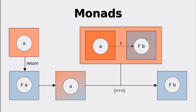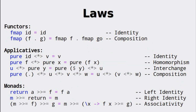In summary, functors, applicatives and monads have laws that they need to obey. These laws directly stem from the laws we discussed coming from category theory. When implementing your own instances of these classes, your implementation should obviously obey these laws.